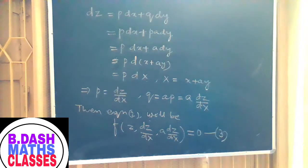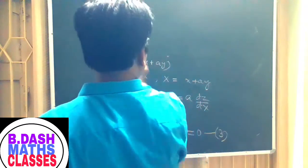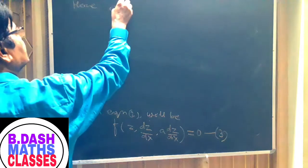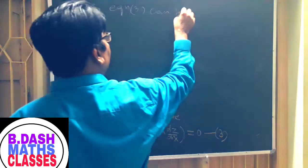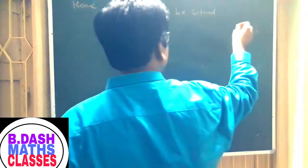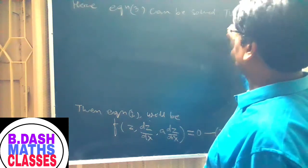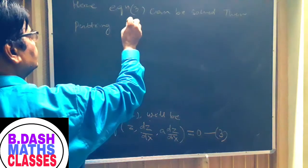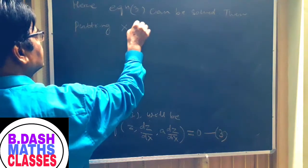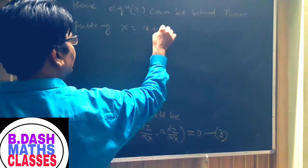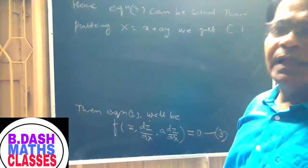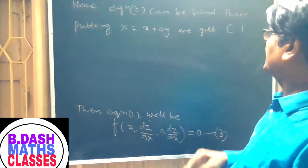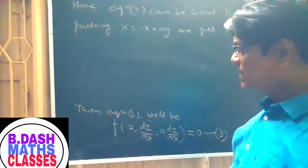Equation 3 is an ordinary differential equation which we can solve. After solving equation 3, we put X = x + ay to get the complete integral, which is denoted CI.